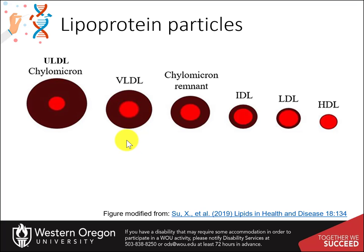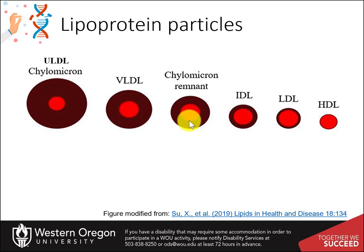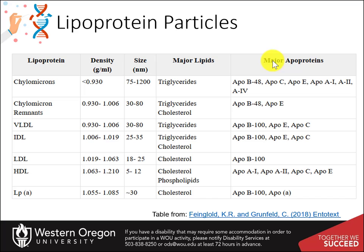To very low density lipoproteins, intermediate density lipoproteins, low density lipoproteins, and high density lipoproteins. Chylomicrons are the largest in diameter with the lowest density and the highest TAG content. Chylomicron remnants are in between VLDL and IDL in density. Cholesterol is transported by all lipoproteins and is particularly concentrated in HDL and LDL particles. Each class of lipoprotein particle contains unique apolipoproteins that can be used along with their density to identify them.